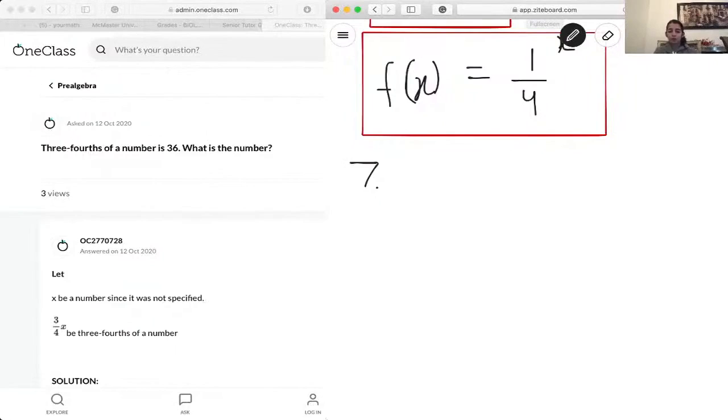So three-fourths of a number, that number is going to be a variable. I like to use x, but you can use any. It doesn't matter which one you use.